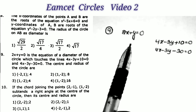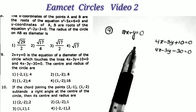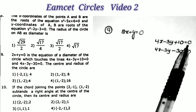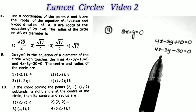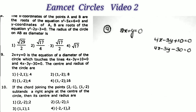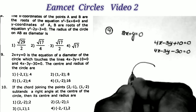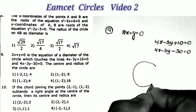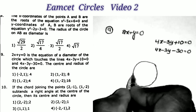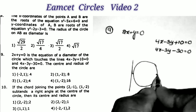Sum number 9: If 2x + y = 0 is the equation of the diameter of a circle which touches the lines 4x − 3y + 10 = 0 and 4x − 3y − 30 = 0, then what is the center and radius of the circle?